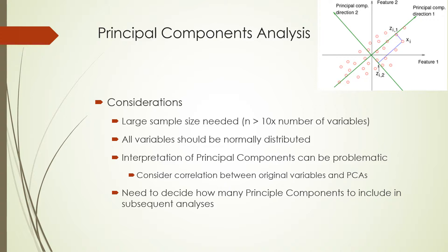A final step in any PCA analysis is deciding how many principal components to include in subsequent analyses. If you have 20 variables measured at each site, you may decide that three principal components explain most of the variation in those data, or somebody else might decide four or five. There are some fairly objective approaches to deciding how many principal components to include — using eigenvalues greater than one is one way — but different scientists might do this differently, which introduces some subjectivity into that part of the analysis.